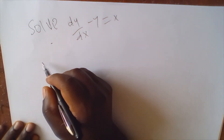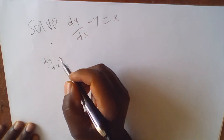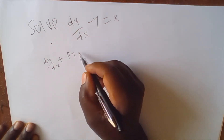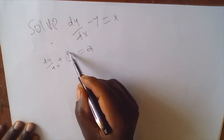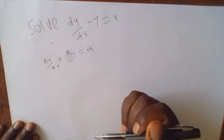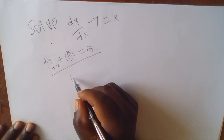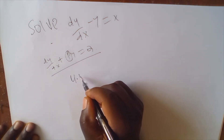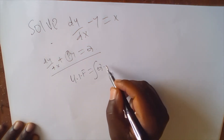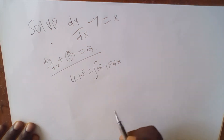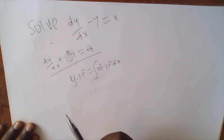Linear equations are of the form dy/dx plus Py equals Q. From this equation, the integrating factor is always identified, and the solution of this kind of equation is given by y times the integrating factor equals the integral of Q times the integrating factor dx.